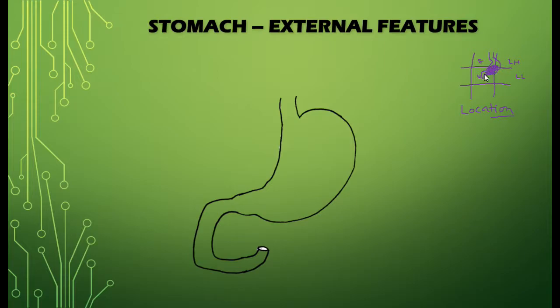This is the position of the stomach in the quadrants or in the body. It will occupy the epigastric, umbilical, left hypochondrium, and left lumbar regions. Now we will discuss the parts of the stomach.